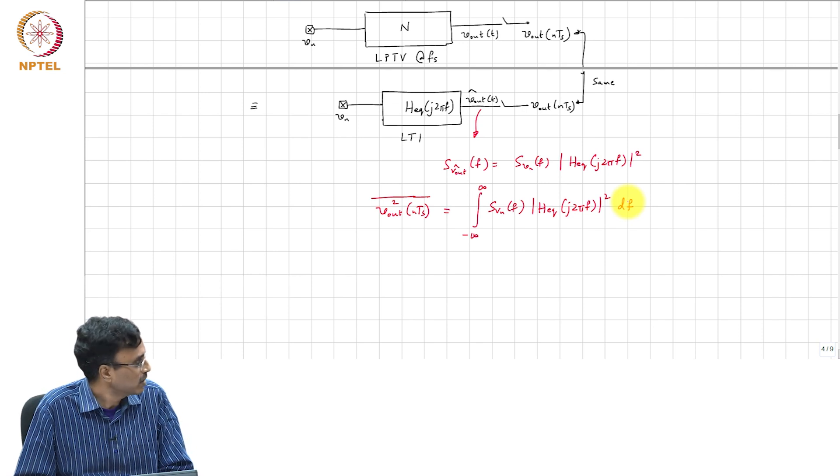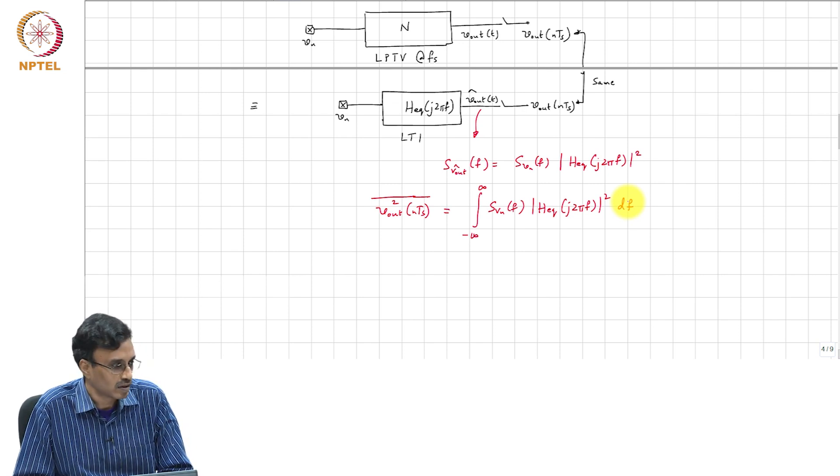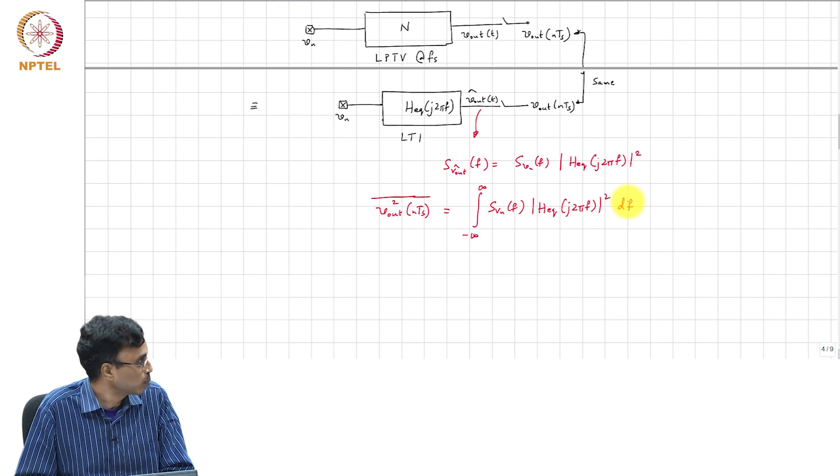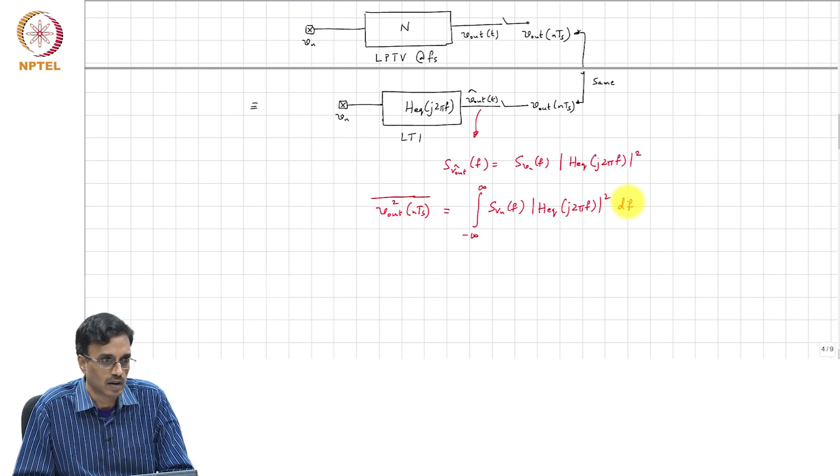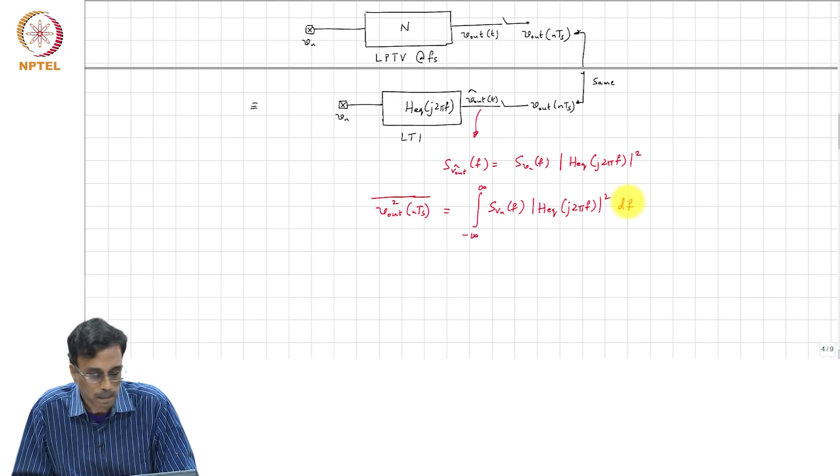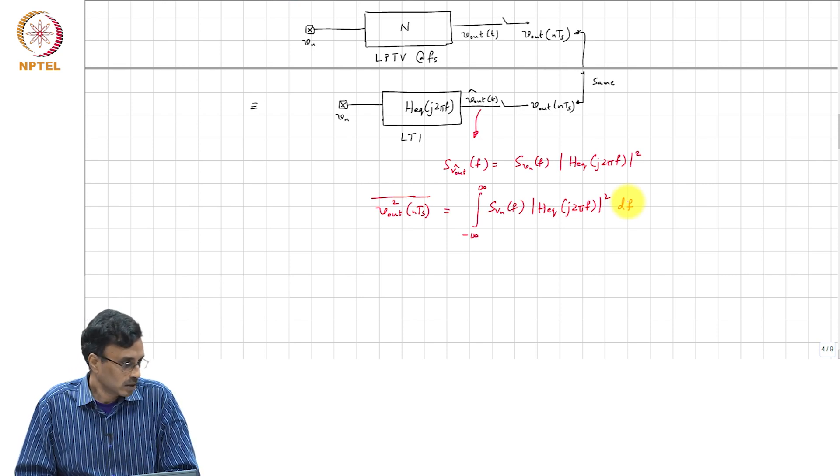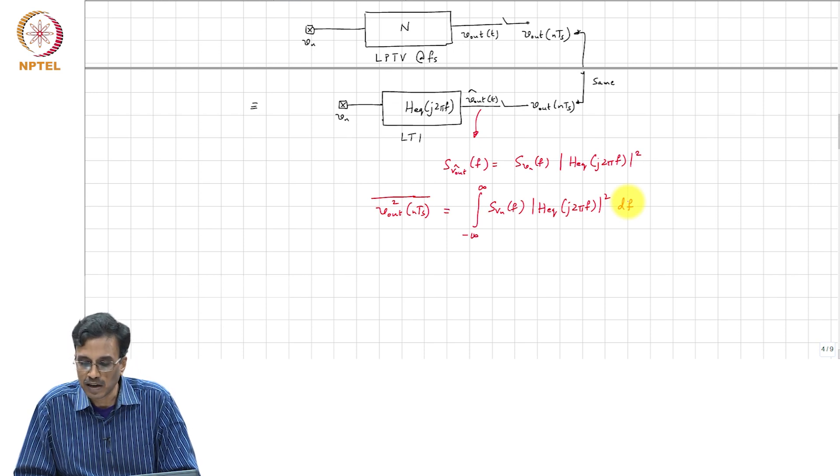And this is independent of N simply because the process at the output of the time invariant filter is stationary. So, again if you know H_equivalent of J 2 pi f, then this calculation becomes straightforward.